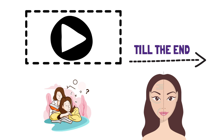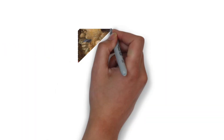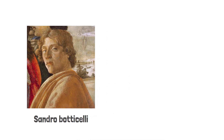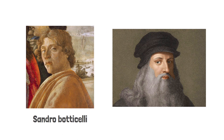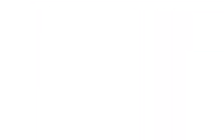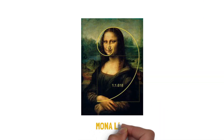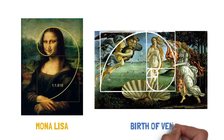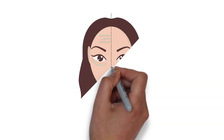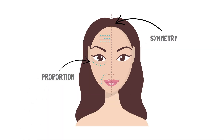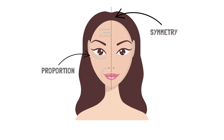Since the Renaissance period, artists like Botticelli and Leonardo da Vinci have used the golden ratio in their paintings, such as the Mona Lisa and Birth of Venus. We may be unaware of it, but we subconsciously judge beauty by facial symmetry and proportion.